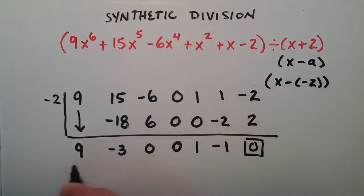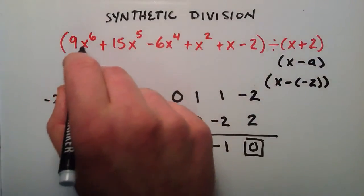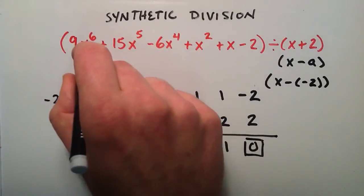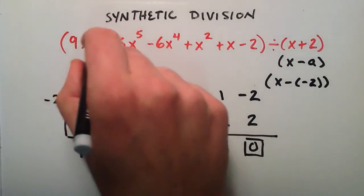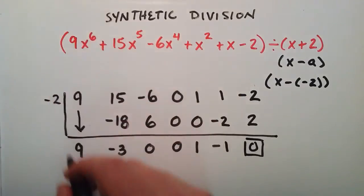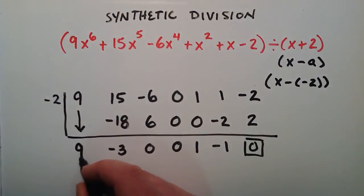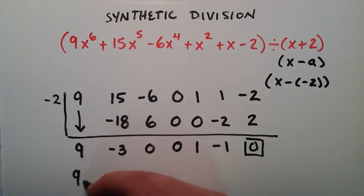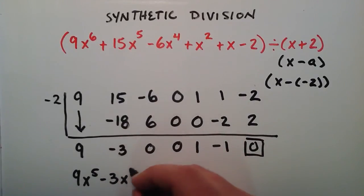So now we have the coefficients of our answer. And because we were dividing into a 6th degree polynomial, we basically go 1 less than the degree here. So 6 minus 1 is 5. So therefore this is the coefficient of x to the 5. So this is 9 times x to the 5. And then it's minus 3 times x to the 4th.